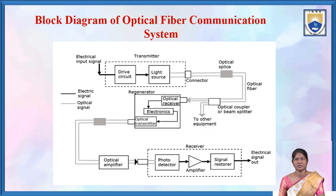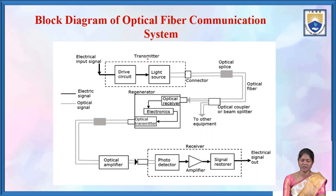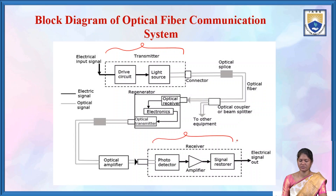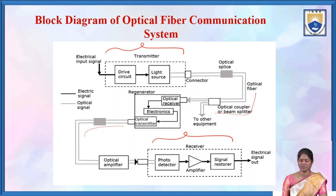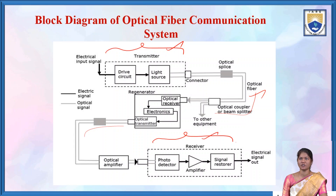This is the block diagram of the optical fiber communication system. Here you can see the transmitter, the receiver, and the optical fiber acting as the transmission channel. These are the three main parts of the optical fiber communication system.